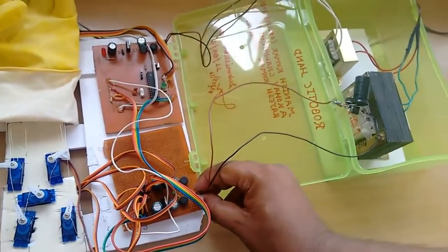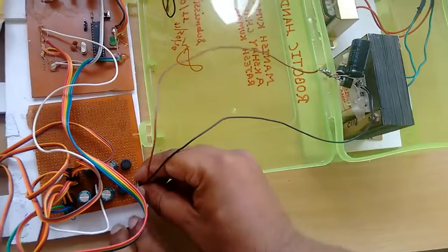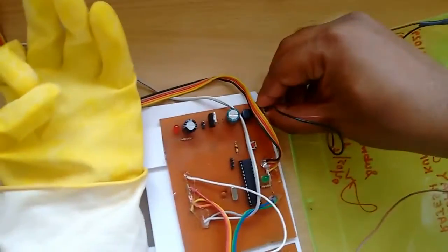The first transformer gives power supply to our servo motors, and the second one gives power to the microcontroller circuit.